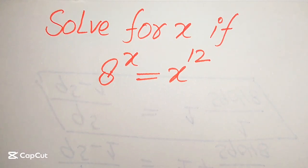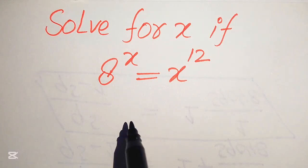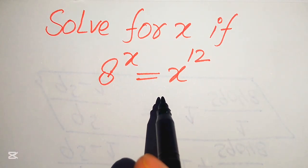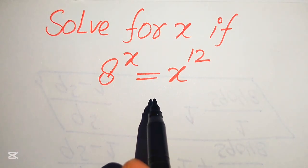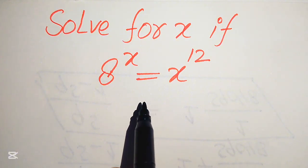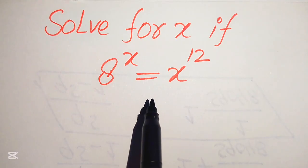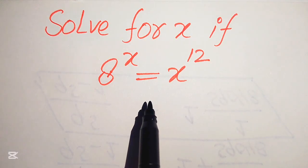Hello everyone. Today I want to show you how to solve this problem: find all values of x if 8 to the power of x equals x to the power of 12. I hope you like this method, but if you have any other method in mind, please don't hesitate to write it in the comment section.